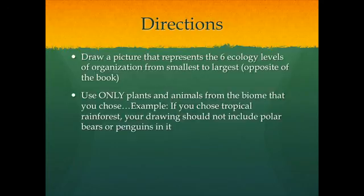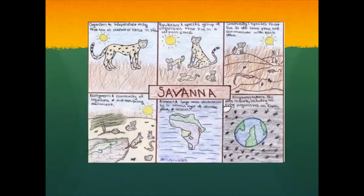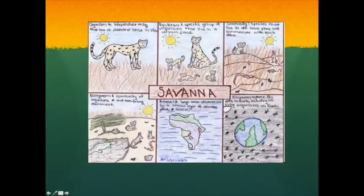Use organisms and plants that would be found in your biome. Now for some examples: you can set up your paper by dividing a blank sheet of computer paper — which the sub will pass out — into six boxes. That's what most students do, but you can also get creative. You can see six boxes here: organism, population, community, ecosystem, biome, biosphere. You don't have to do six boxes.